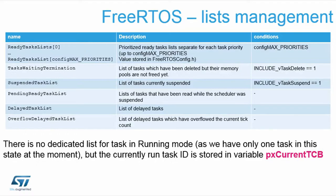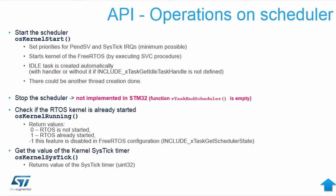There is also an overflow delayed task list for tasks whose timeout overflows the current tick count. That's how FreeRTOS organizes tasks across different states. The API offers functionality to end the scheduler, but it is not implemented on STM32 — meaning we never exit osKernelStart. You can also check whether the kernel is running, which is very important.